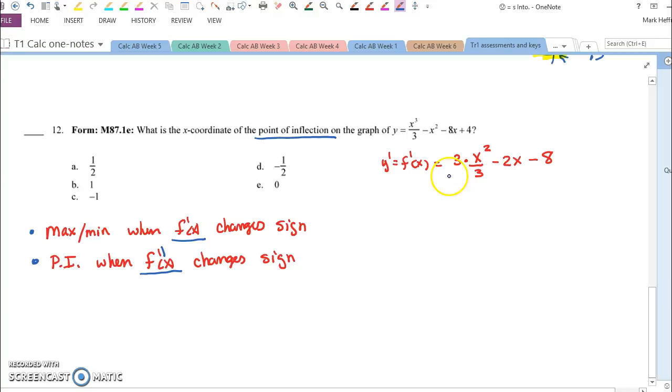So that means we need a first derivative, which is here, using the power rule. The three will cancel with the fractional three in the denominator. So now I have x squared minus 2x minus 8 as my first derivative.